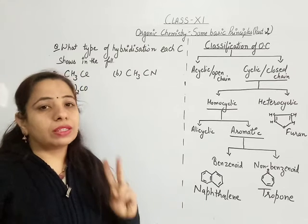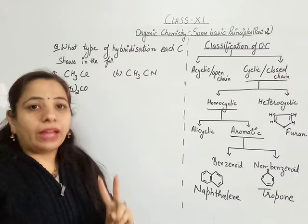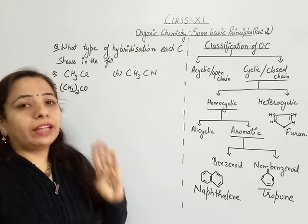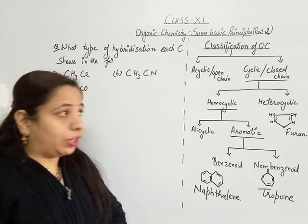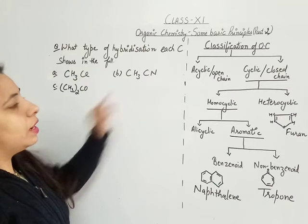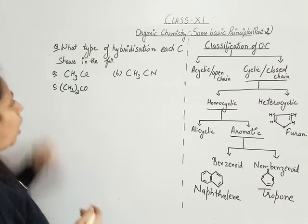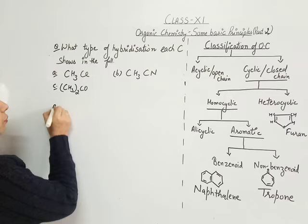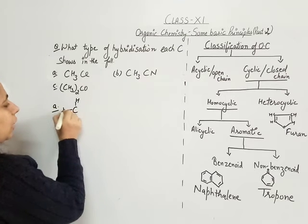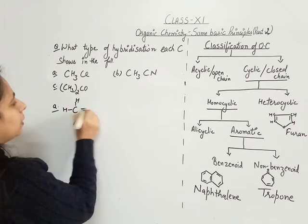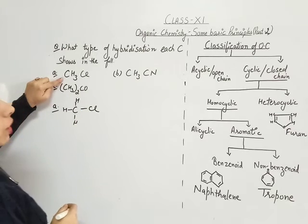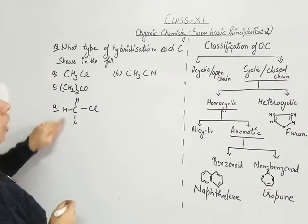In the previous video we covered four ways to represent molecules: the structural formula, the bond line formula, the condensed formula, and the 3D representation. Here, the one given to us is the condensed formula. For the first molecule, CH3 — this is how it looks in structural formula versus condensed formula.